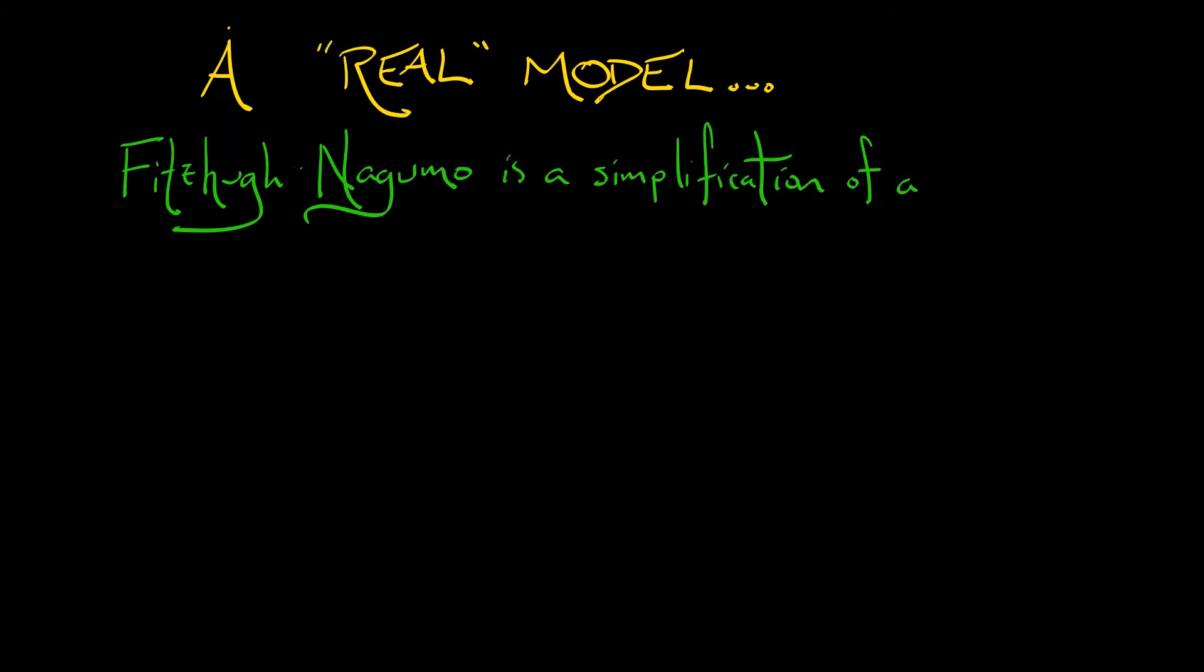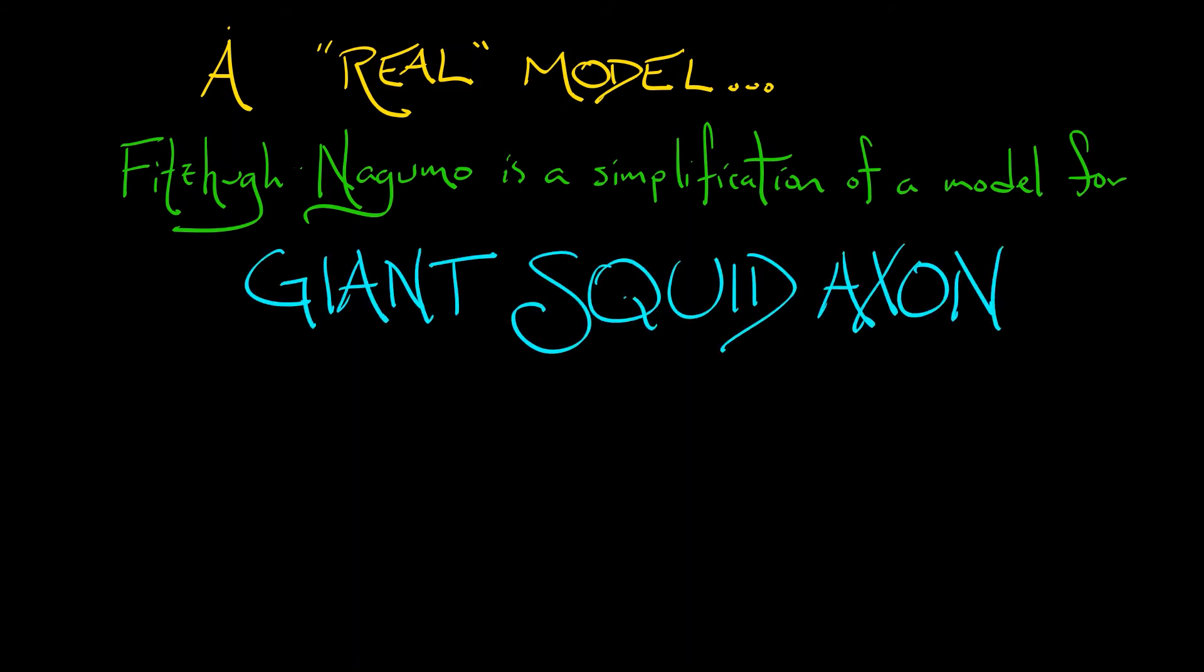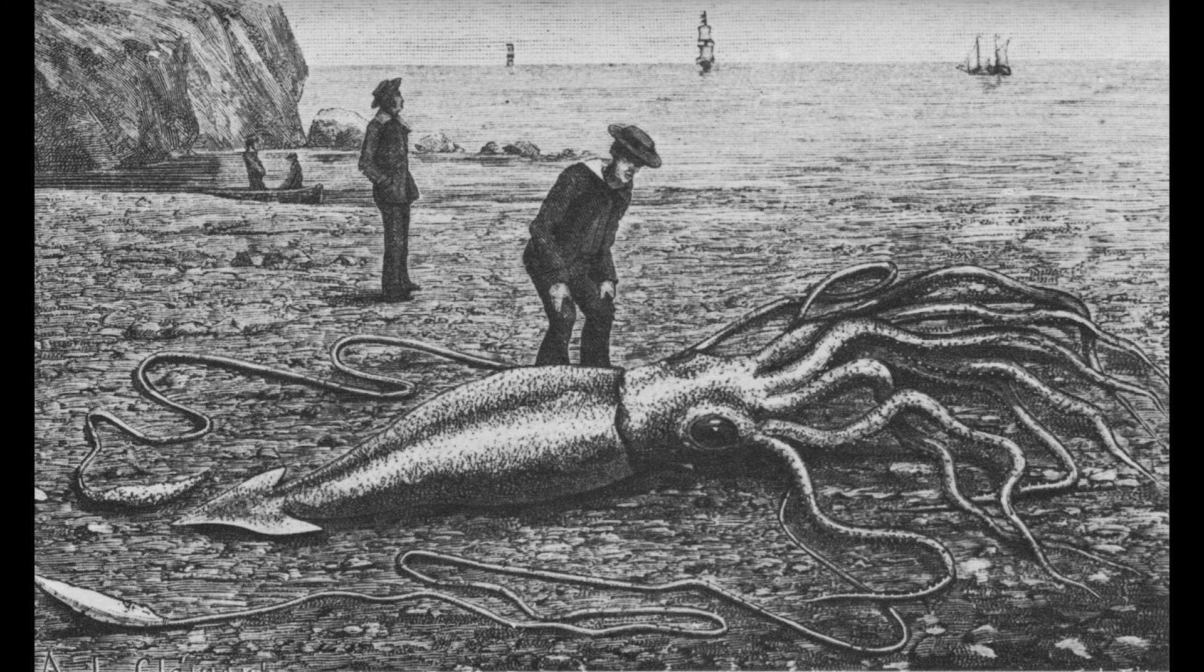So what would a real model consist of? Well, FitzHugh-Nagumo is really a simplification of a much larger and very famous model, a model that is based on a giant squid axon. Wow, that's so cool.